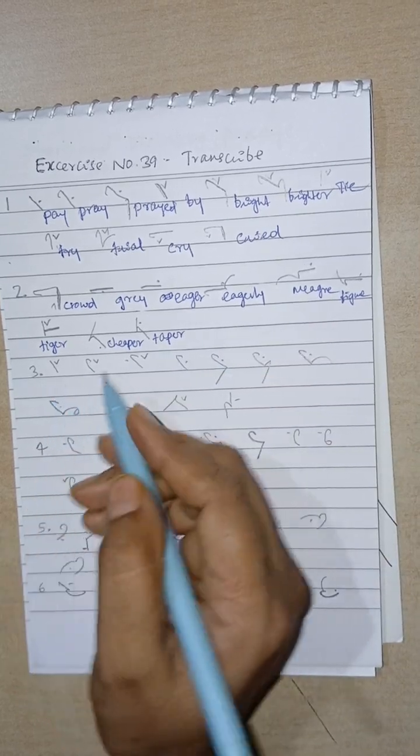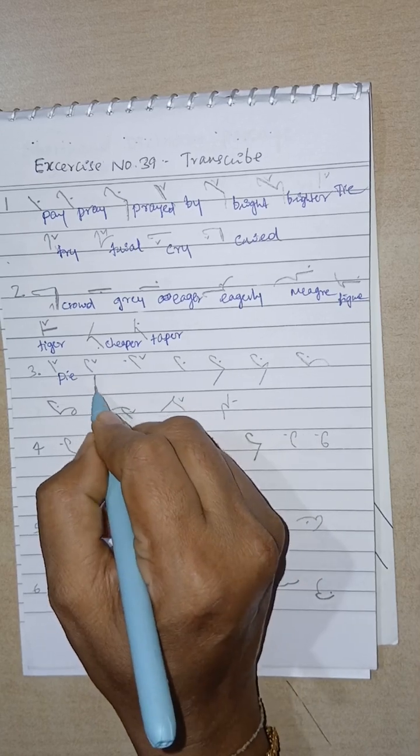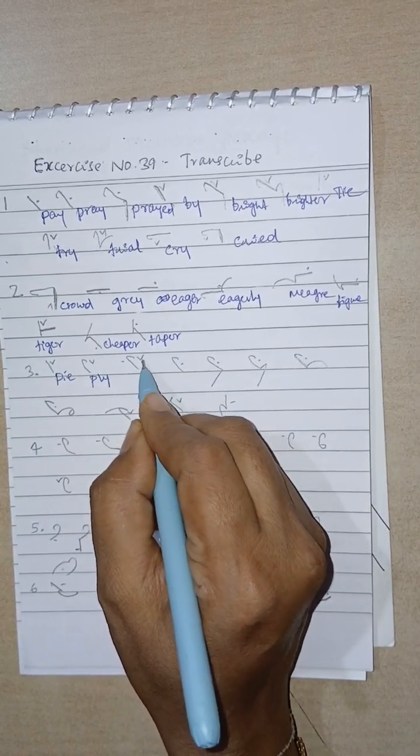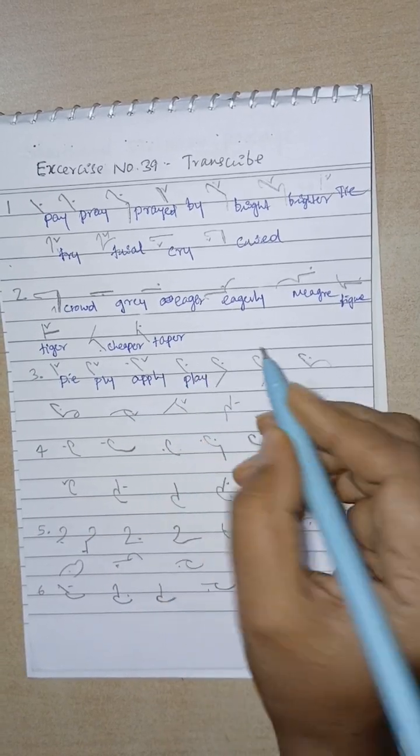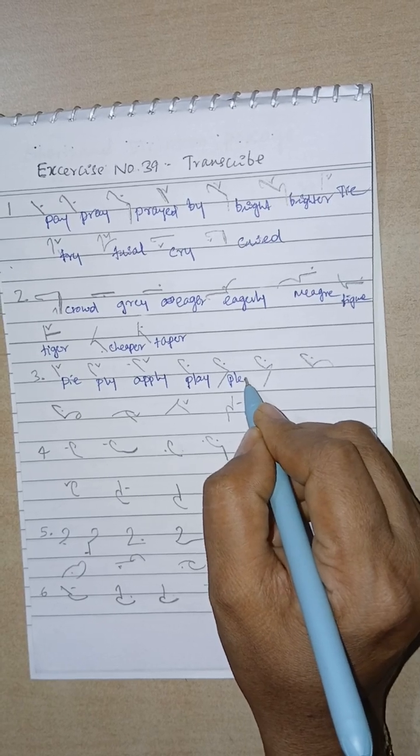Then third line, Pi. P, I diphthong, Ply. Pal, I diphthong. Apply, A oval, I diphthong. Pal. Play, Pal, A oval. Pledge, Pal and J, A oval.